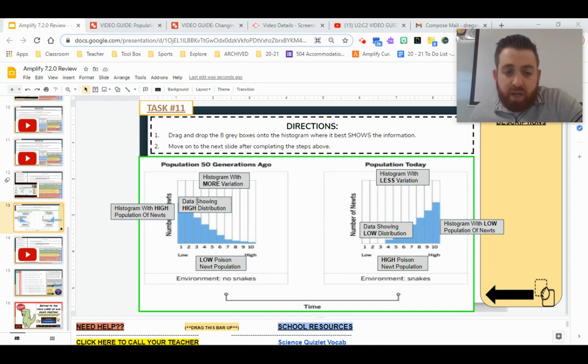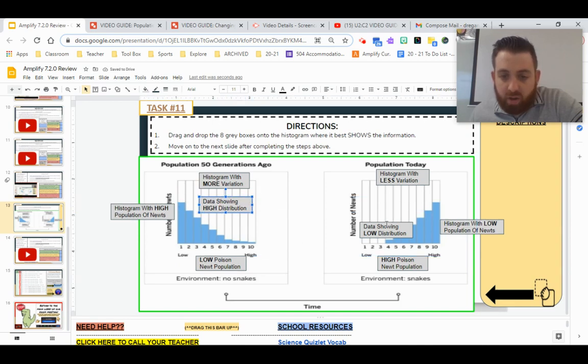Histogram with high population of newts. If you notice, we have all 10 variations filled with data along with that data starting from high and going to low versus over here, we have our data going high to low on the opposite side, but we have three variations missing.